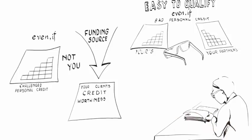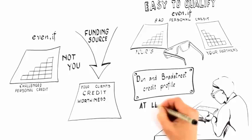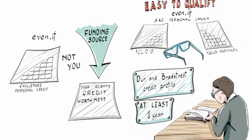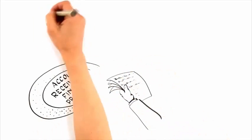Now, the funder will review your business's Dun & Bradstreet credit profile for initial approval. To qualify, your business will need to be open for at least a year.